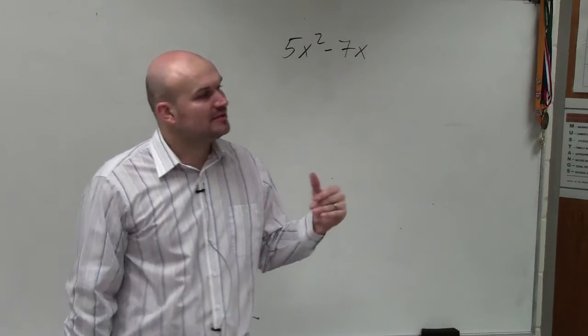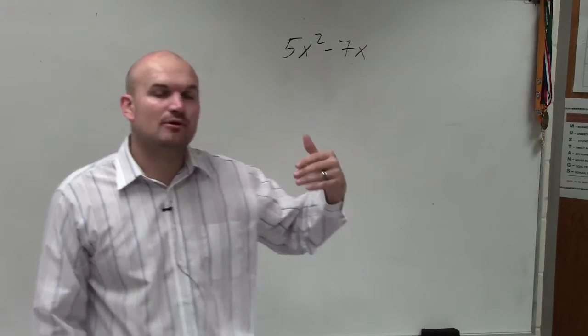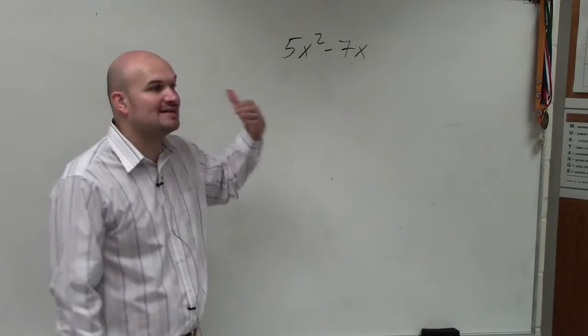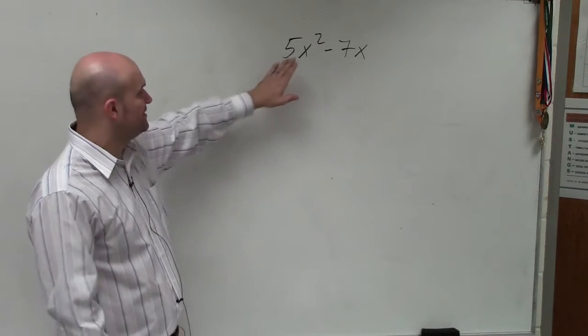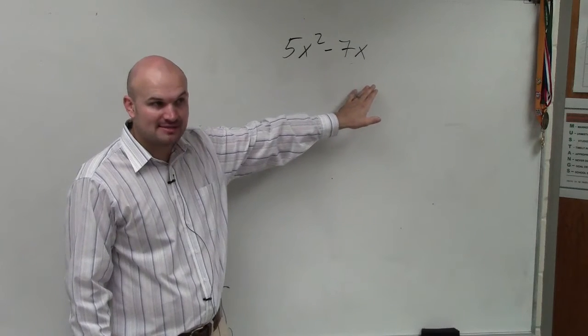We're factoring out the GCF, and basically what the GCF represents is the greatest common factor. Meaning, we want to factor out the greatest common factor that divides evenly into 5x squared and into negative 7x.